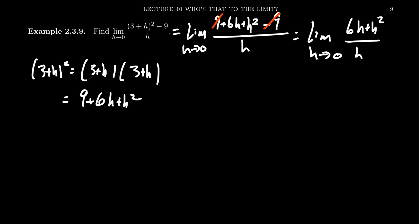And so looking at the numerator, we notice that everyone in the numerator is divisible by h. There's an h right here, there's an h right here. If we factor out that h, we end up with the limit of h times (6+h) all over h, taking this limit as h goes to 0.